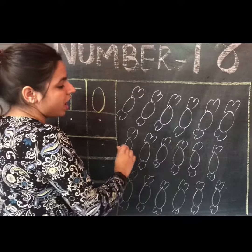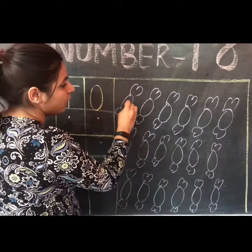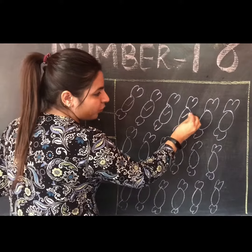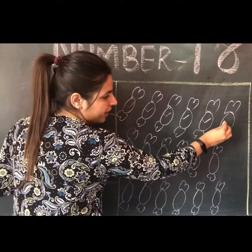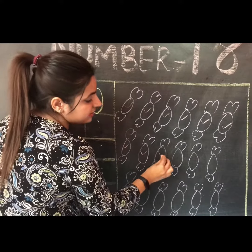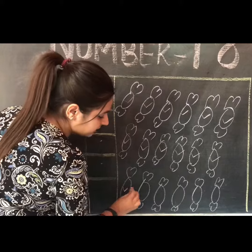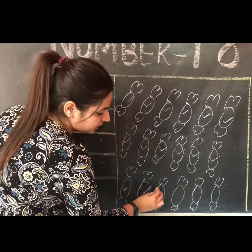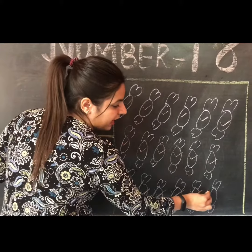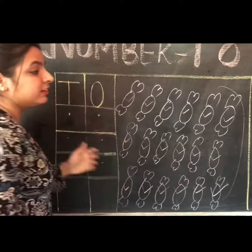Wow, so many toffees are there. Let's count. 1, 2, 3, 4, 5, 6, 7, 8, 9, 10, 11, 12, 13, 14, 15, 16, 17 and 18. How many toffees are there? 18.